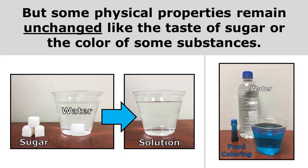But some physical properties remain unchanged, like the taste of sugar or the color of some substances. Once again, we have our sugar dissolved in water, and this solution will taste sweet because the sugar stays sweet even after it's dissolved. Our food coloring, which is blue, keeps that physical property and stays blue even after it's dissolved in the water. The food coloring becomes evenly mixed with the water, but stays blue — and that actually makes our entire solution blue.